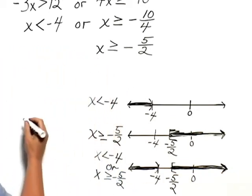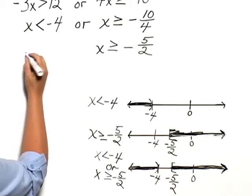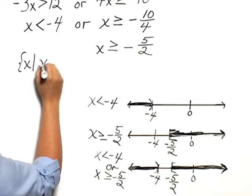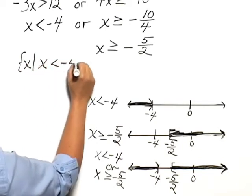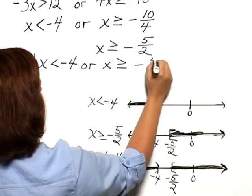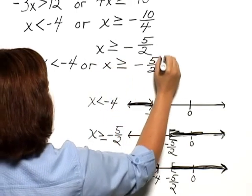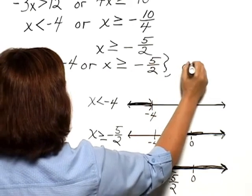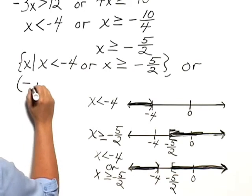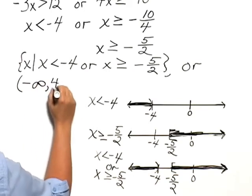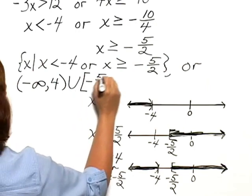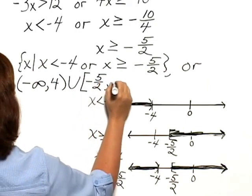When we write our solution set using set-builder notation, we write the set of all x such that x is less than negative 4 or x is greater than or equal to negative 5 halves. Or we can write that in interval notation as the union of the interval from negative infinity to negative 4, not including negative 4, and from negative 5 halves to infinity.